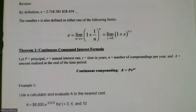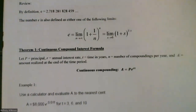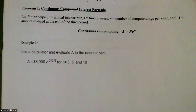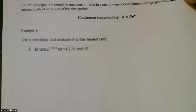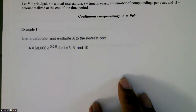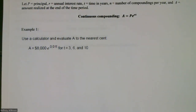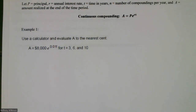We're going to use that continuous compound interest formula with some examples. Here we're going to use a calculator to evaluate A to the nearest cent. We have A equal to $8,000 times e to the 0.01 times T, and we're going to evaluate that for T equal to 3, T equal to 6, and T equal to 10.